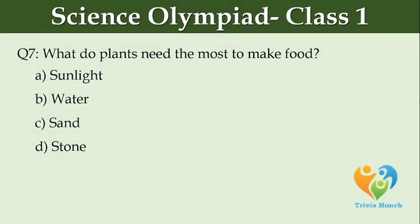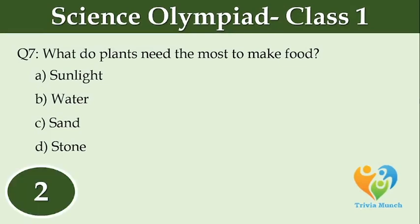What do plants need the most to make food? Option A: Sunlight. Option B: Water. Option C: Sand. Option D: Stone.